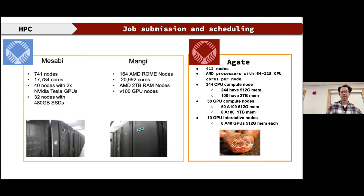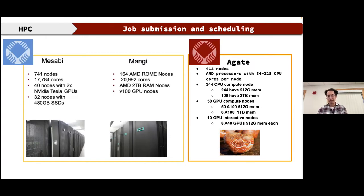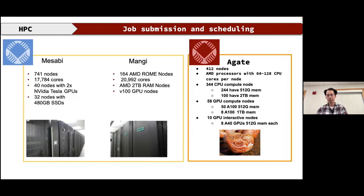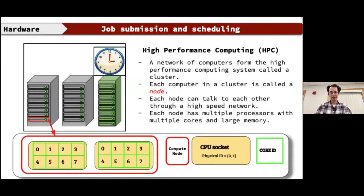Agate, our latest supercomputer, has about 412 AMD nodes — some with 128 cores and some with 64 cores per node — 344 CPU compute nodes (some with 256 GB, 100 with 2 TB memory), and 58 GPU compute nodes: 50 with 4 A100 GPUs and 8 with 8 A100 GPUs plus 1 TB memory. Agate also has 10 interactive GPU nodes, each with 8 A40 GPUs and 500 GB memory.